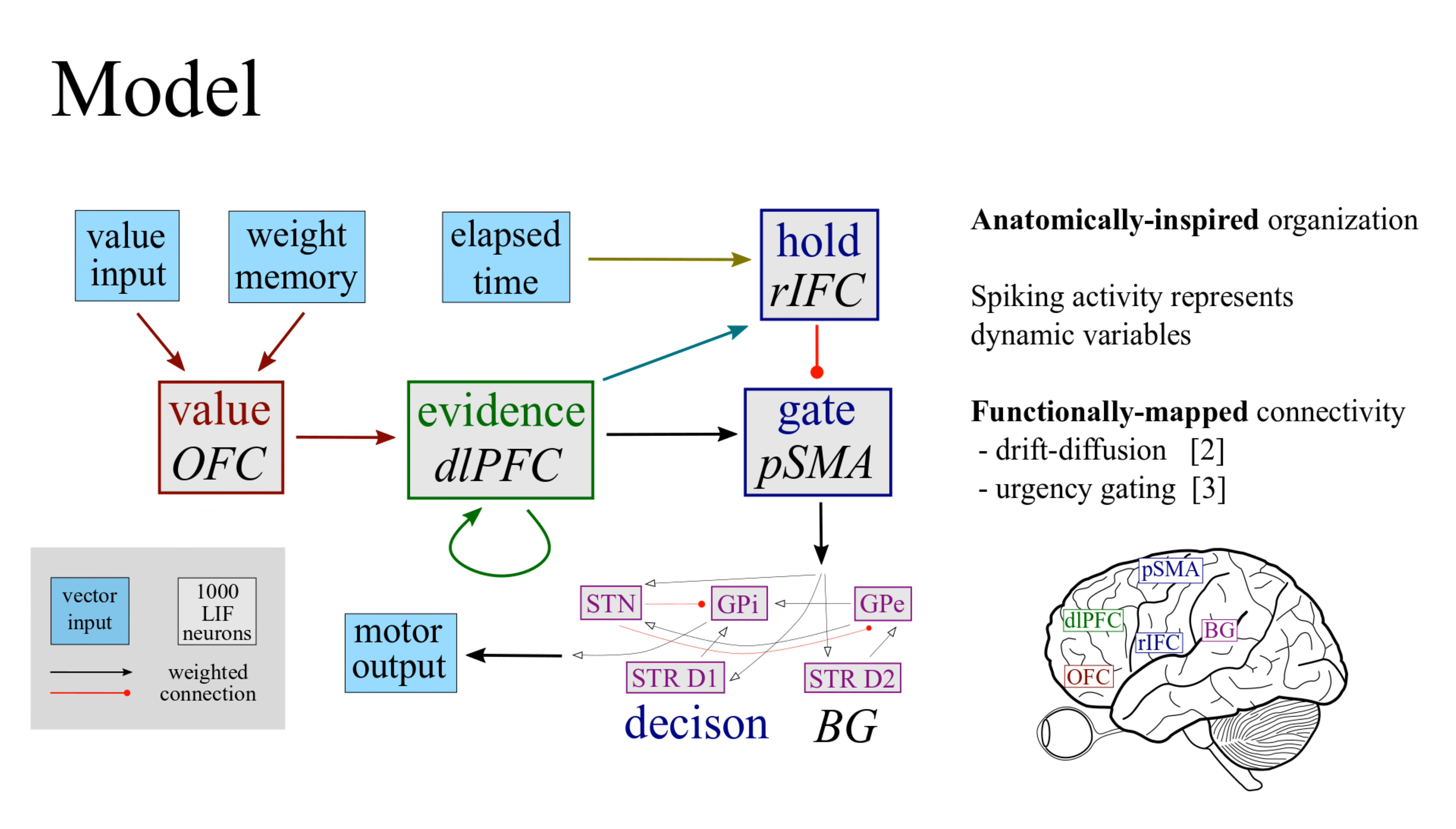To model this task, we created a neural network whose organization reflects the anatomy of brain areas involved in decision-making. These include orbitofrontal cortex, dorsolateral prefrontal cortex, right inferior frontal cortex, presupplementary motor area, and the basal ganglia.